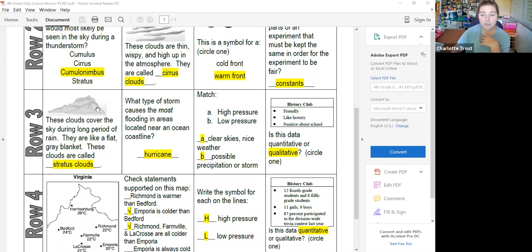Stratus clouds, those are the ones that we have that are really close to us. It's really low in the sky and it's almost like a thin gray blanket. And it's usually like rainy and drizzly type of weather.